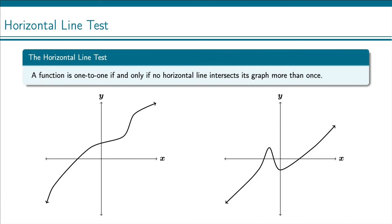Determining if a function is one-to-one is not too bad. We have a test that we can use if we have the graph of the function, and it's called the horizontal line test.